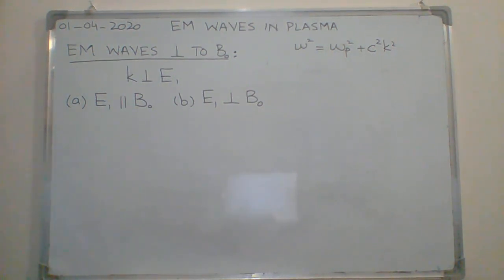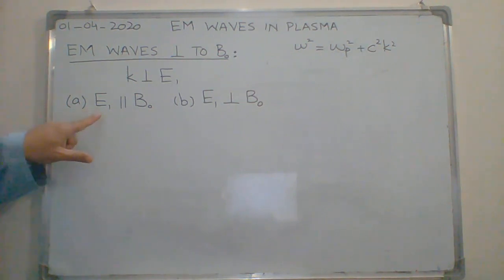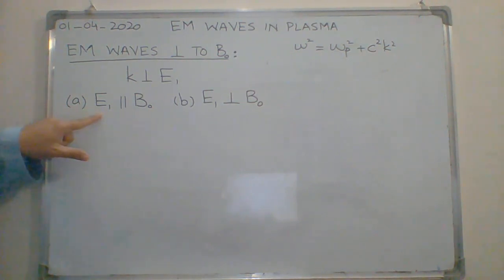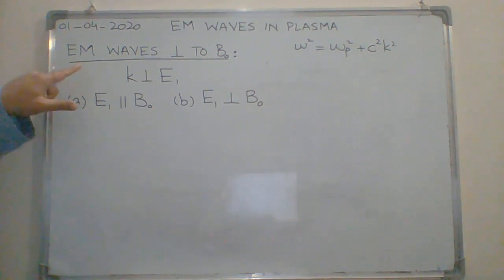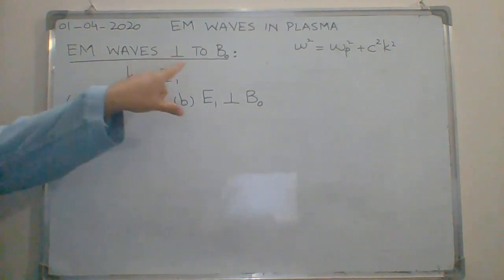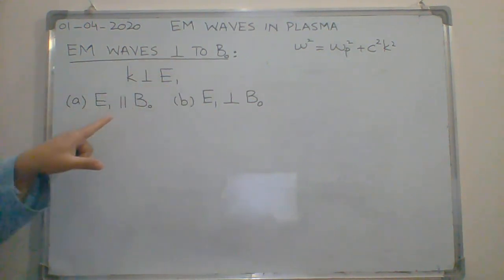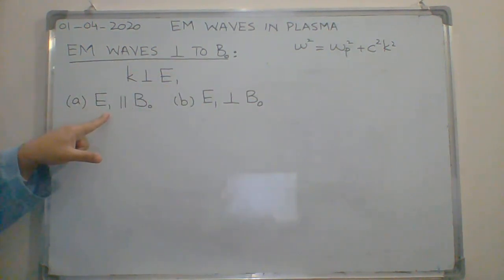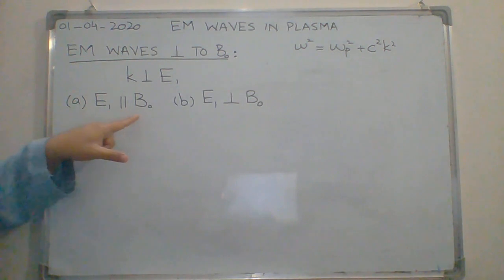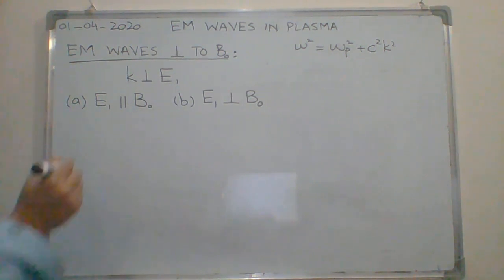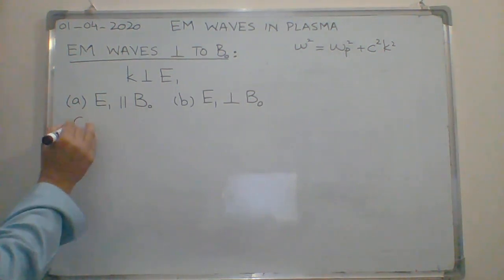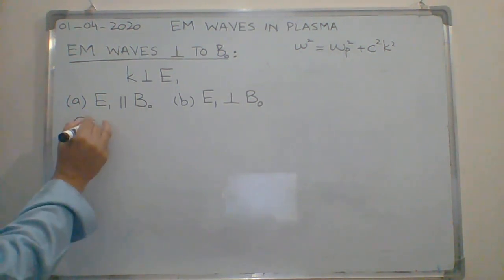Electromagnetic waves propagating perpendicular to B0 with the perturbed electric field component parallel to B0 are called ordinary waves. I will explain why we call them ordinary waves in a moment.